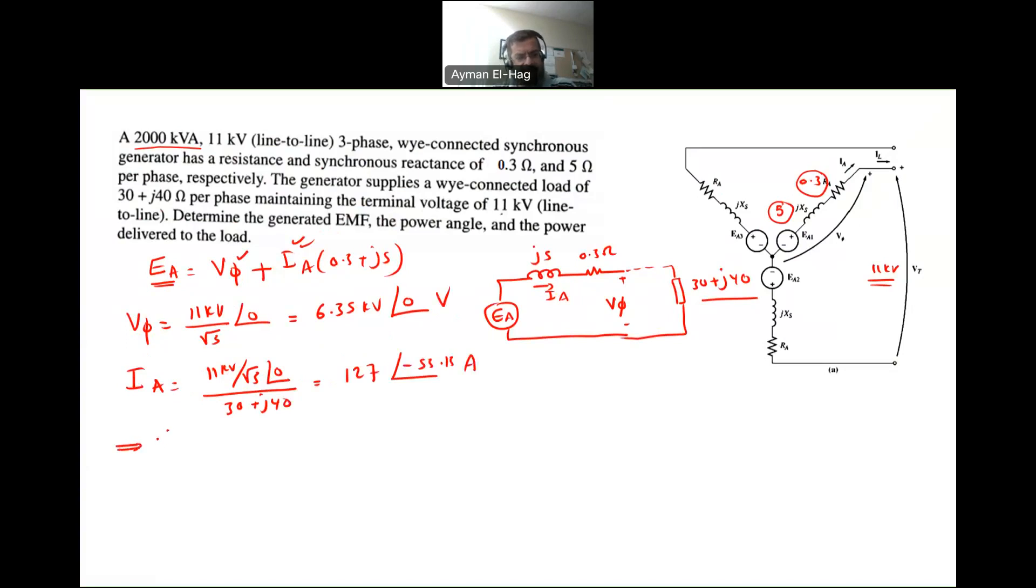from this I can find my EA, which is basically equal to 6.35 times 10 to the power of 3, angle of 0, plus your IA 127, angle of minus 53.13 times 0.3 plus J5. And when you do the multiplications, this is equal to 6890 volt, angle of 2.91. So this is your EA for the phase.